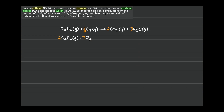Keep in mind as you write out the balanced chemical equation that the state labels — gas, liquid, solid — are extraneous information and won't affect your answer, so you can leave out those little 'g' labels. Once you have the balanced chemical equation, the next step is to determine the limiting reactant.